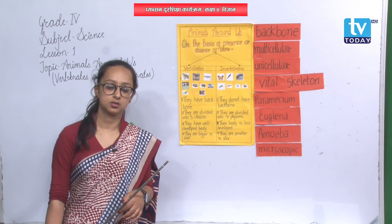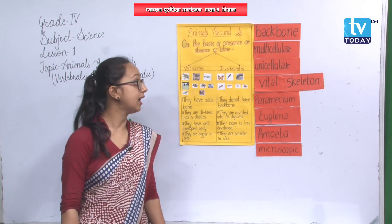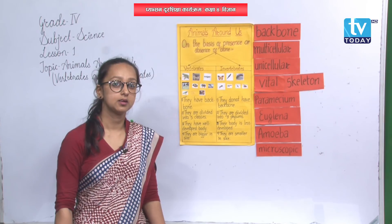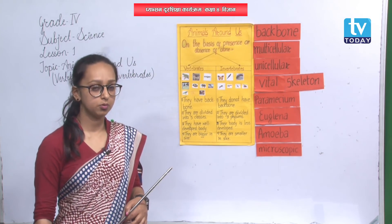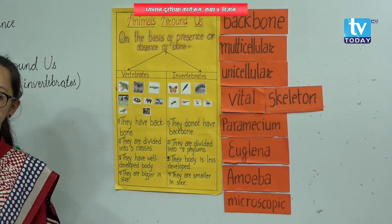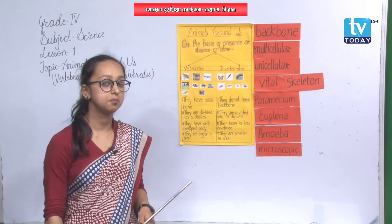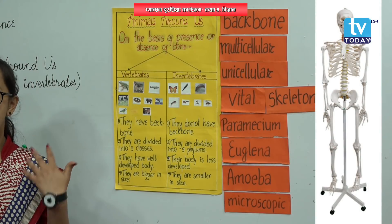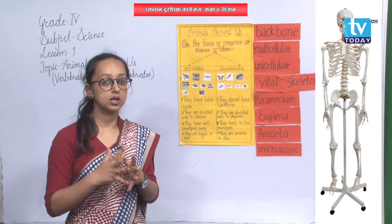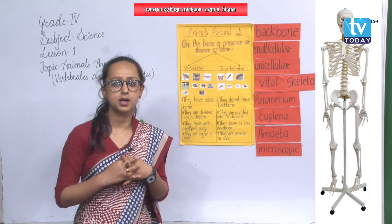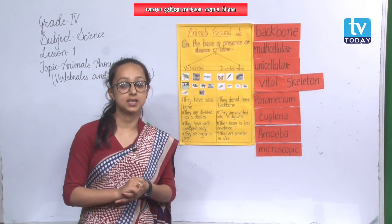Vertebrates have bones in their bodies. The internal structure of our body that is made up of bones is called a skeleton. When we see our body from outside it is covered with skin, but the internal structure made up of bones only — that is called the skeleton. What is the use of the skeleton?